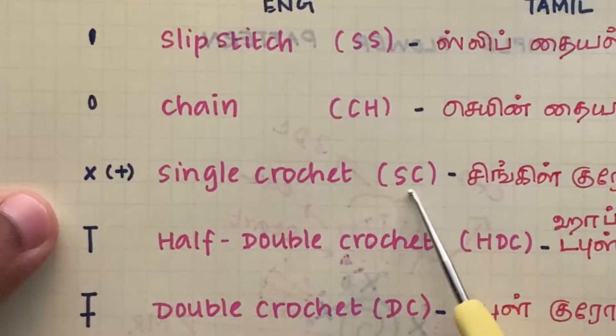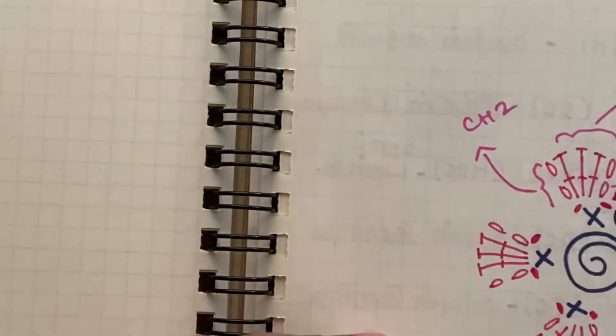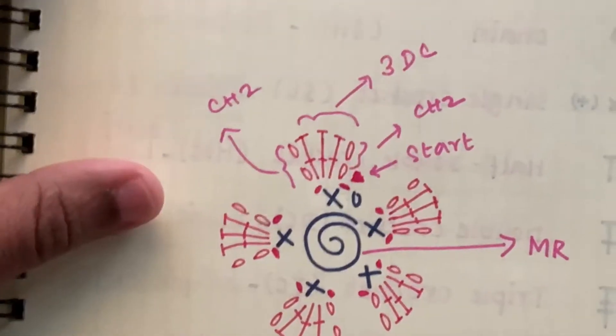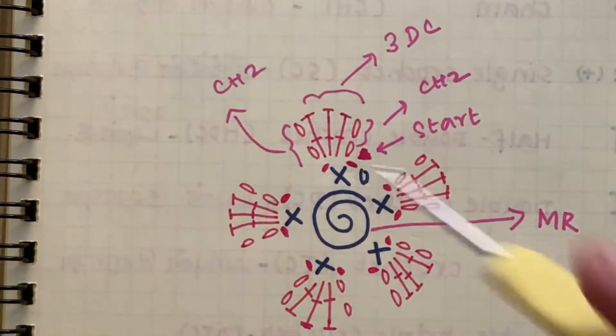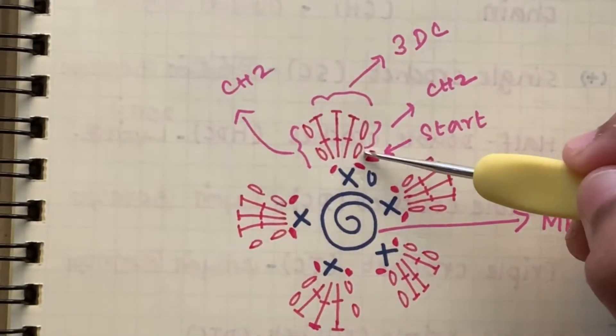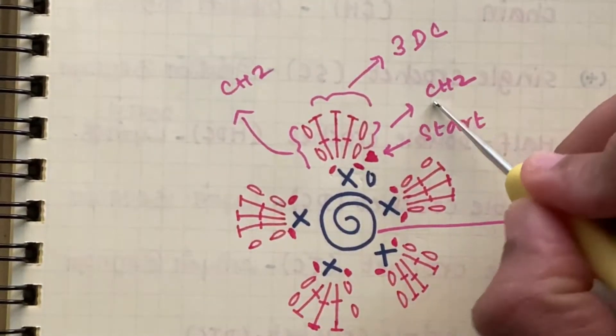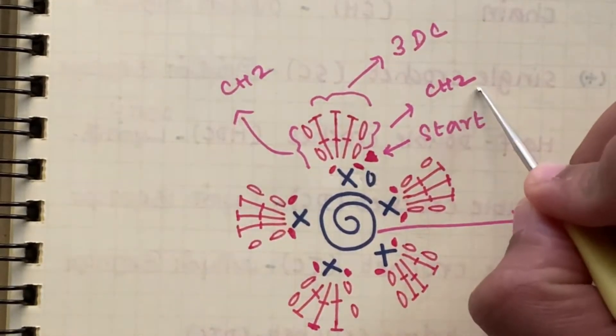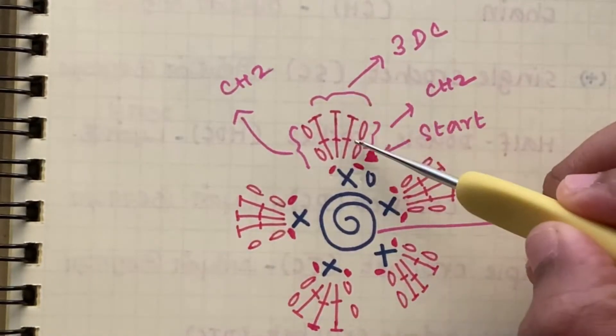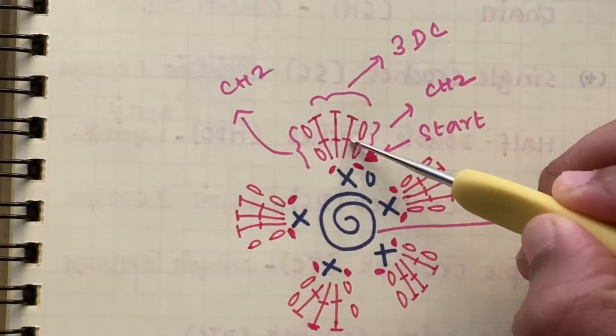So the X marks represent single crochet. So let's go back to our pattern. And then we are doing two chains here, represented as chain two.